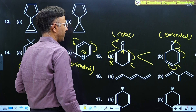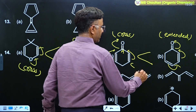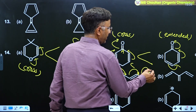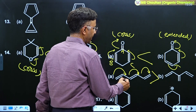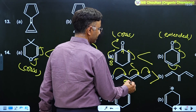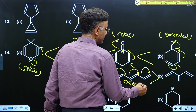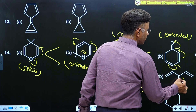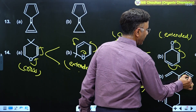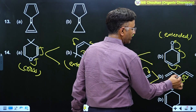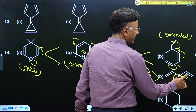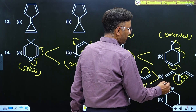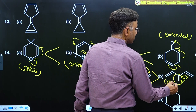In example 16, in the first structure, A is in conjugation with B — this is extended conjugation. In the second structure, the pi bond is in conjugation with A and also with B in parallel, meaning the pi bond is in conjugation with the left as well as the right pi bond — therefore it is cross conjugation.